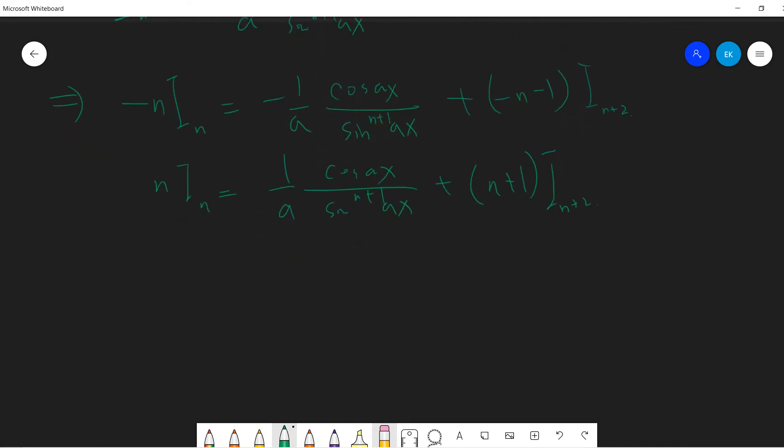Okay. So that means (n-1)(n+1) i_(n+2) is this, so change this term into the left-hand side. 1 over a cos ax, sine^(n+1) ax plus n i_n. Okay.